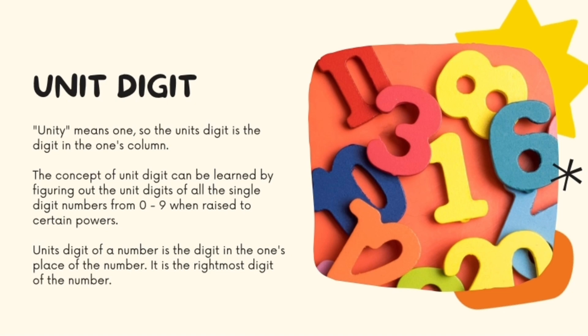The concept of unit digit can be learned by figuring out the unit digits of all the single digit numbers from 0 to 9 when raised to a certain power. Unit digit of a number is the digit in the one's place of the number. It is the rightmost digit of the number.